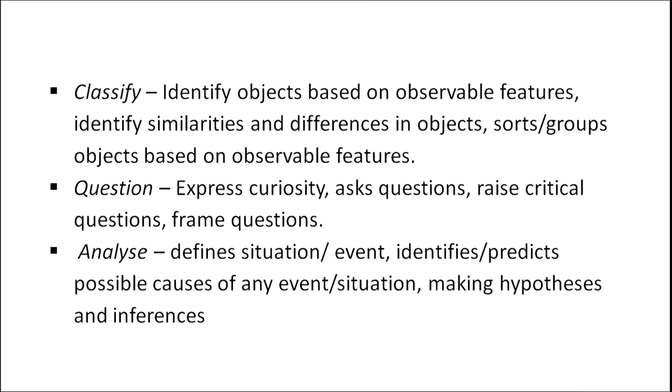He should be able to write. We also talk about the ability of a learner to classify — classification based on certain observable features of objects, like different vegetables. Based on observable features, children would categorize them as this type or that type of vegetable, similarly with flowers or any objects they interact with. They should also be able to question — asking critical questions like why we have to brush our teeth on a regular basis, what is the need?